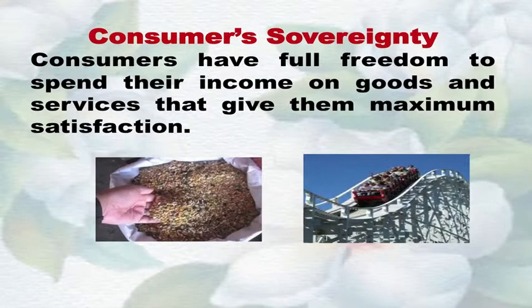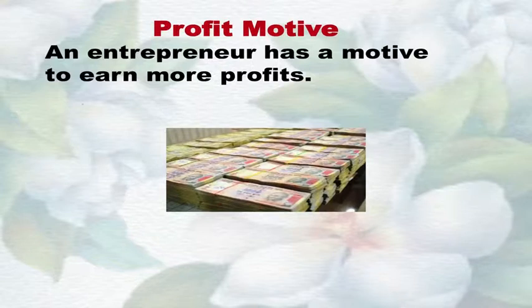Number three: Consumer's sovereignty — in a capitalist economy, consumers are like a king. They have full freedom to spend their income on goods and services that give them maximum satisfaction. Production is guided by consumer's choice; this freedom is called consumer's sovereignty. Number four: Profit motive — self-interest is the guiding principle in capitalism. Entrepreneurs know they will own the profit or loss after payment of all other factors of production, and are always motivated to maximize residual profit by minimizing cost and maximizing revenue. This makes the capitalist economy an efficient and self-regulated economy.